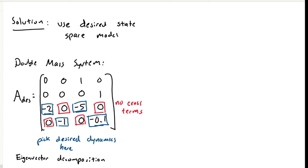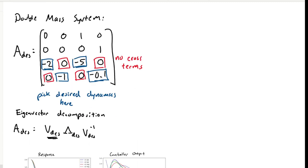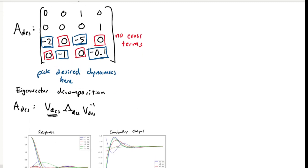So for example, in this double-mass spring damper system, we pick an A matrix which has decoupled the states, and which has the desired dynamics for each individual mass. Then we can use the eigenvector decomposition to break this matrix apart into the desired eigenvalues and the desired eigenvectors.